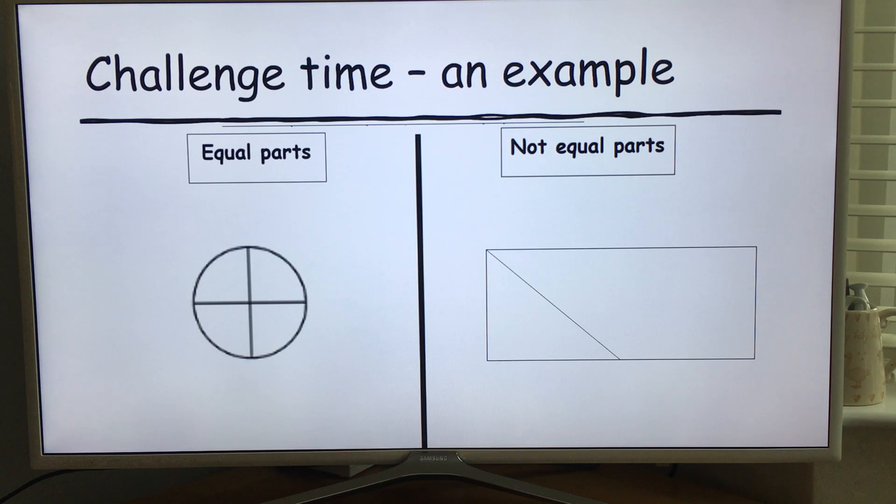And then if you look next to it at the rectangle, I folded the rectangle but they're not equal parts. So there's one of the parts that's much bigger than the other part. So I'd stick that on the not equal parts.